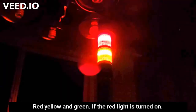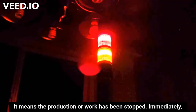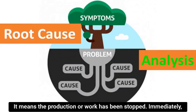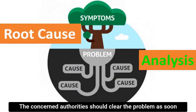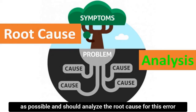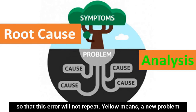If the red light is turned on, it means the production or work has been stopped. Immediately, the concerned authority should clear the problem as soon as possible, and should analyze the root cause for this error, so that this error will not repeat.